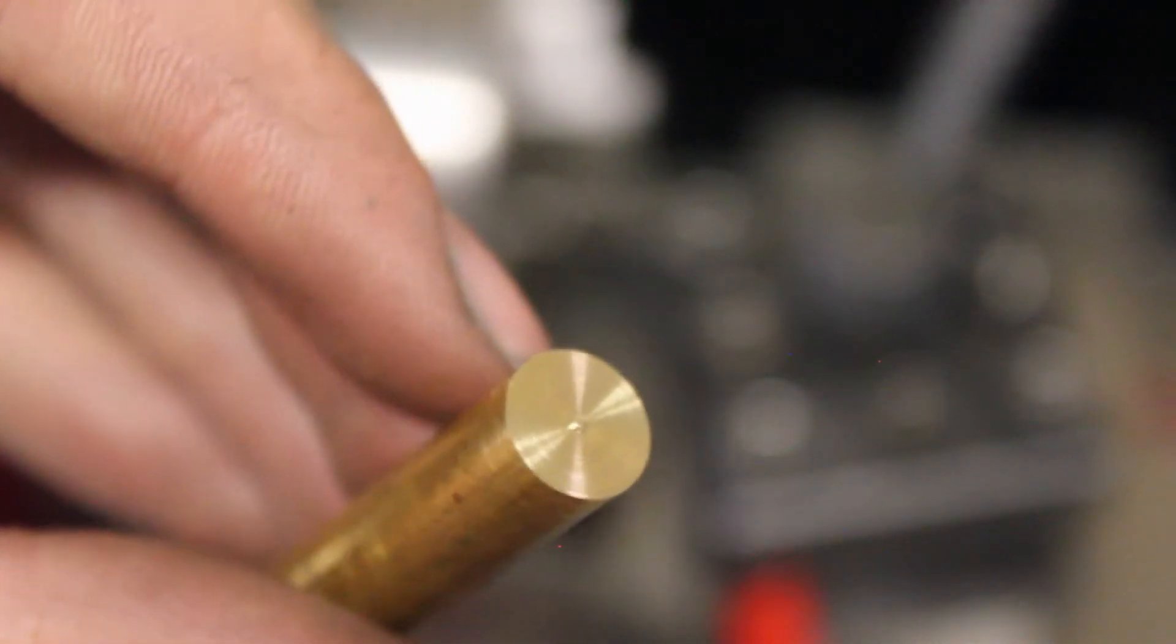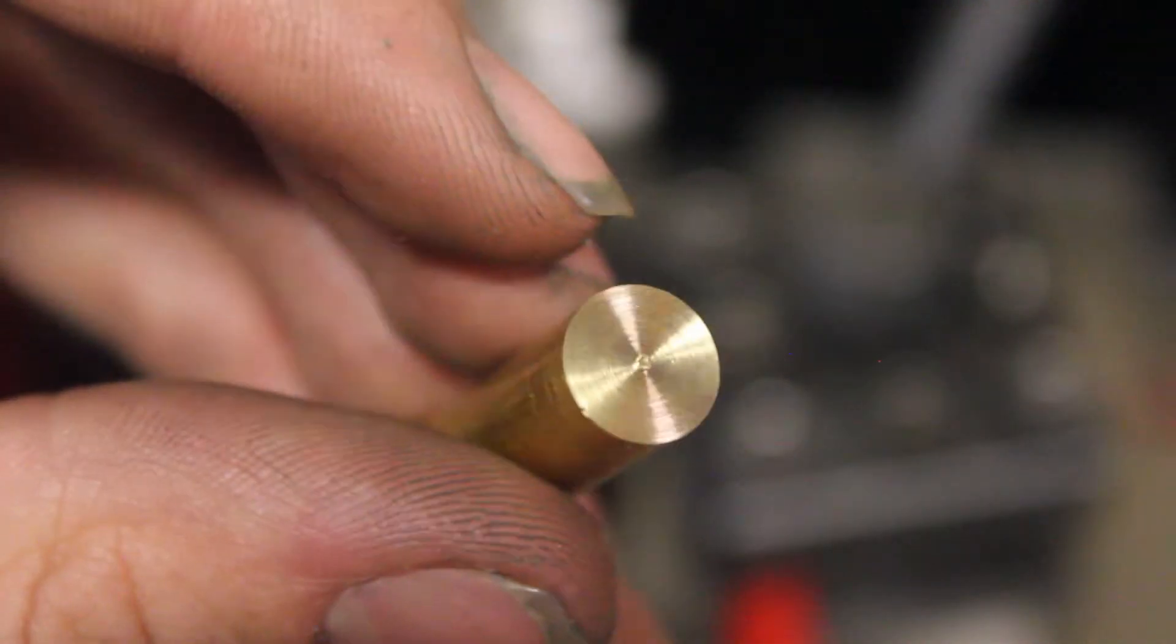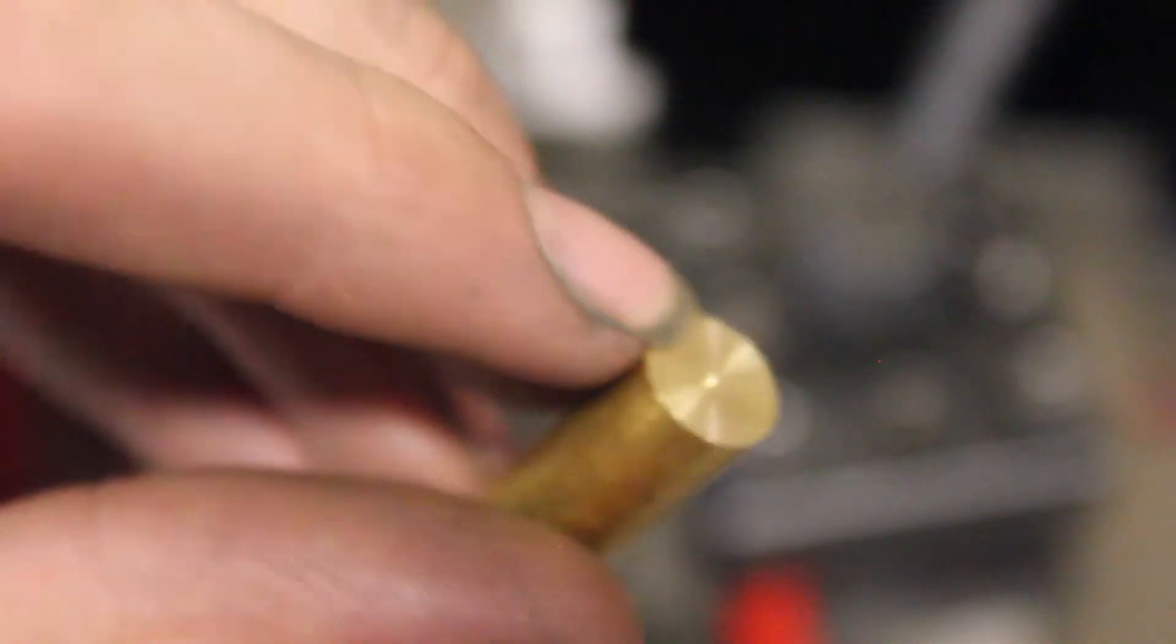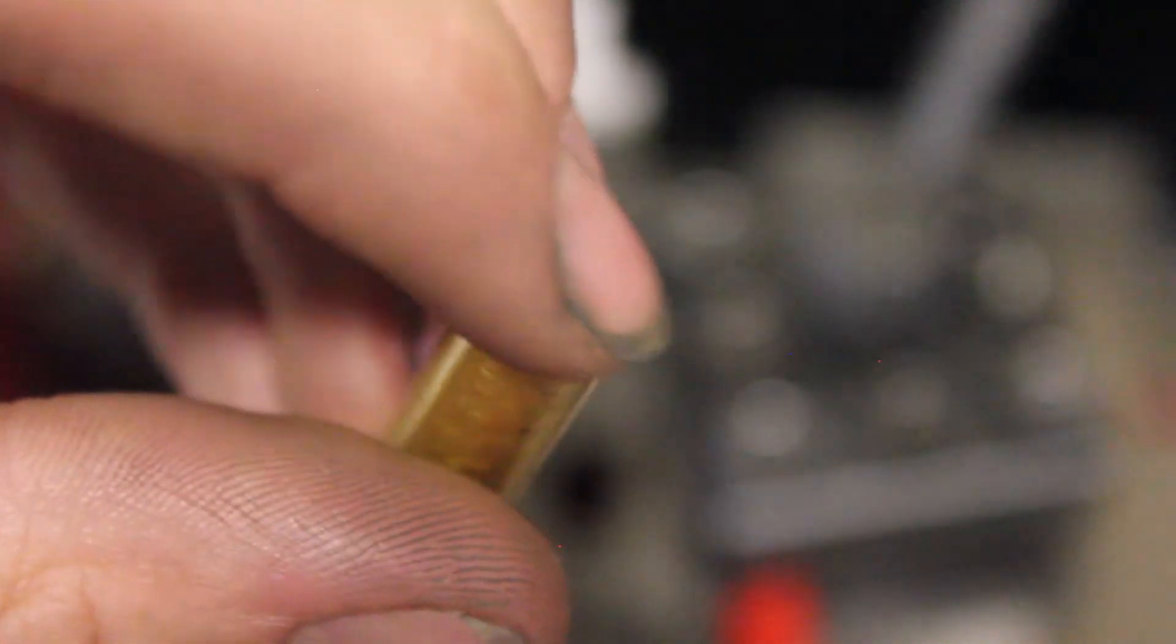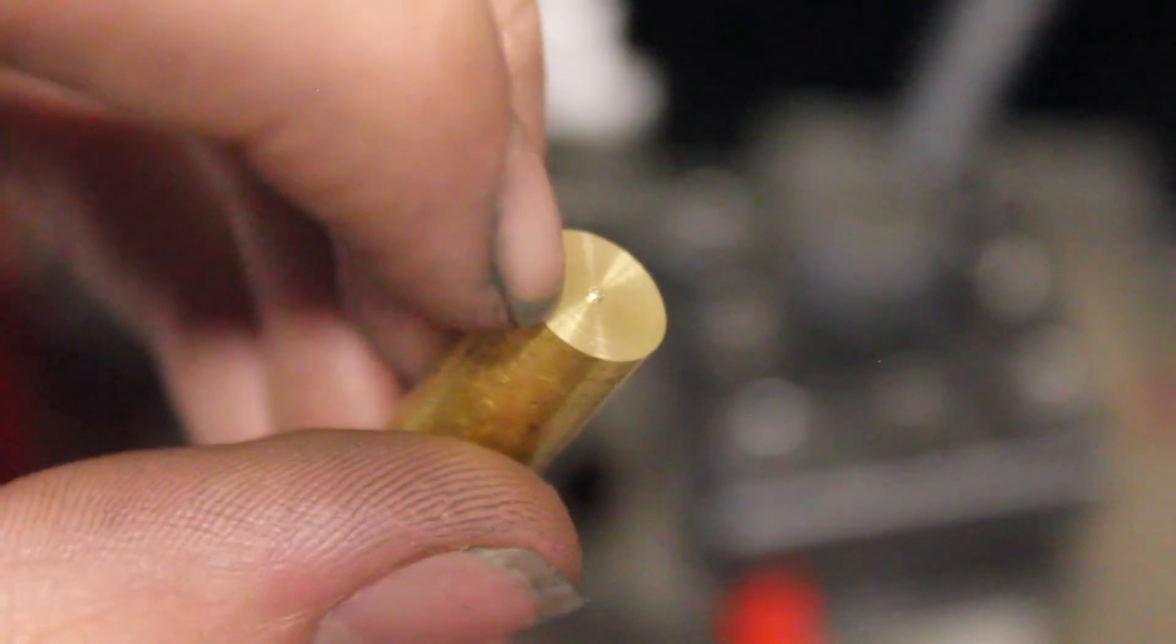So after taking a couple passes on this part, you can see that all of the rough saw marks are taken out of the face. But there's still a problem. There's a little dot there on the tip, on the center of our face there.